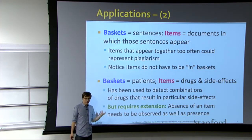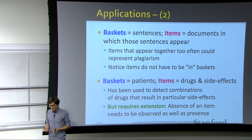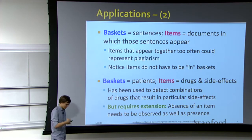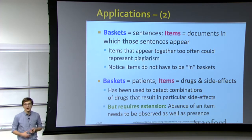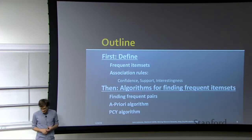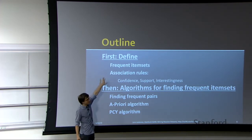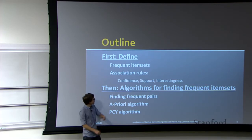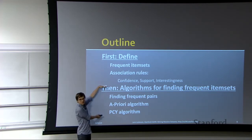You can also think of baskets as patients and items as drugs, side effects, or diseases. This allows you to detect combinations of drugs that lead to particular side effects. An interesting distinction is that it also requires modeling the absence of an item — not having a disease or not taking a drug. There are extensions that allow modeling the absence of an item, not just its presence in the basket.